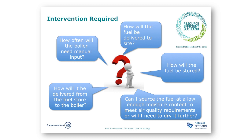The practical considerations you must make include: Do I want an automatic or manual fuel feed system? If I choose automatic fuel feed, do I want a lower cost pellet system with a higher fuel cost, or a higher cost chip-fed system with cheaper fuel? If I choose chips or logs, can the fuel be sourced at a low enough moisture content to meet air quality requirements, or will it need to dry further? How will the fuel be delivered to site, stored, and fed to the boiler? How often will the boiler need manual input?